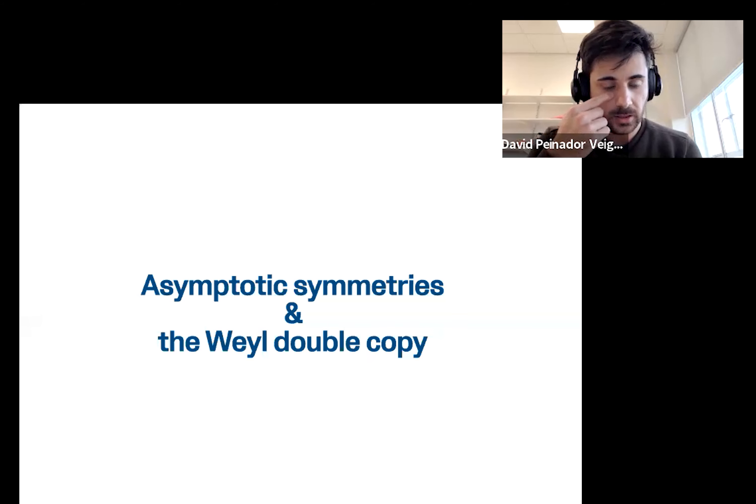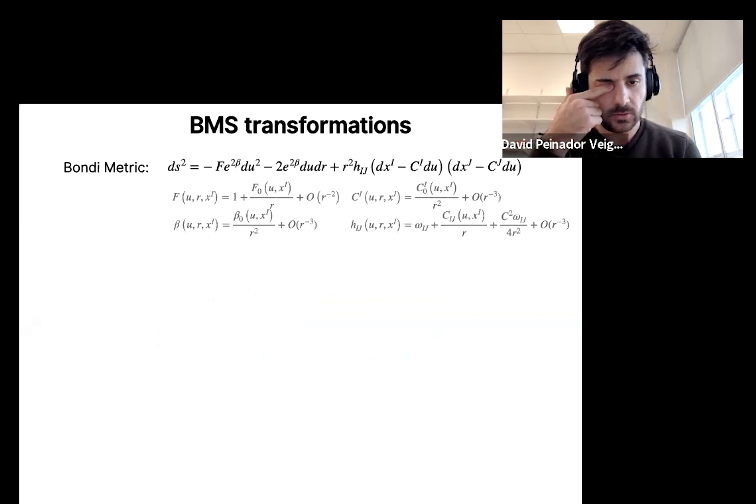Let's now think about something else. So now that we've developed this map between classical solutions of electromagnetism and gravity, we might want to look at how the symmetries in both theories map to each other. And in particular, we're going to look at asymptotic symmetries. So we're going to focus on BMS transformations, which are related to the Bondi metric. The Bondi metric is this metric in which any asymptotically flat spacetime can be put in. And it must satisfy also these fall-off conditions for the different coefficients.